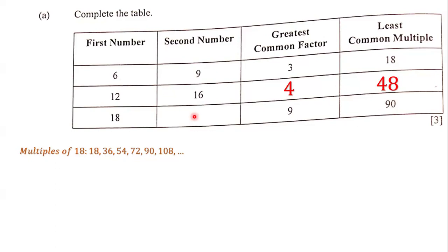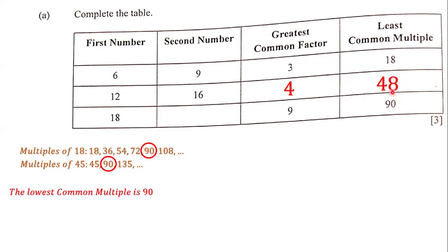Let's list the multiples of 18 and the multiples of 45. The multiples of 18 are 18, 36, 54, 72, 90, and 108. The multiples of 45 are 45, 90, and 135. Looking at both lists, the lowest common multiple of 18 and 45 is 90. That satisfies the first criteria, so we continue testing 45.